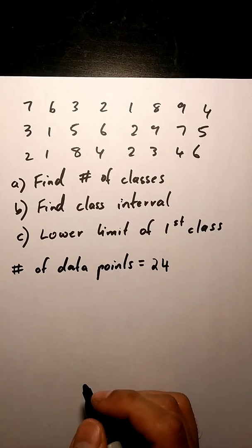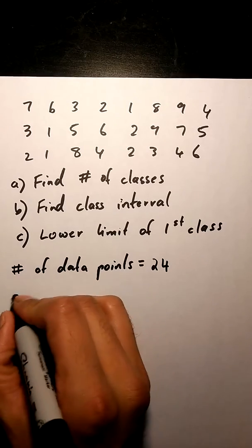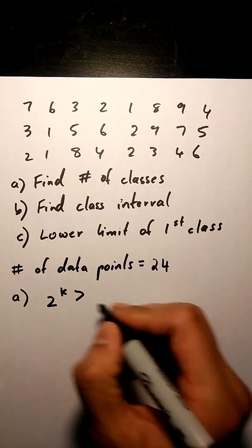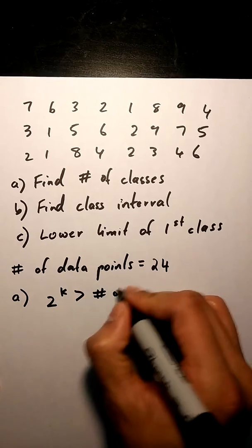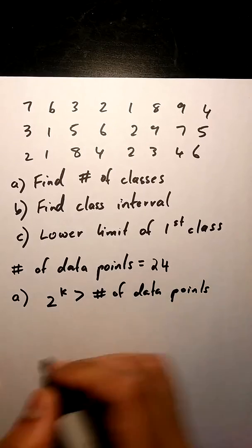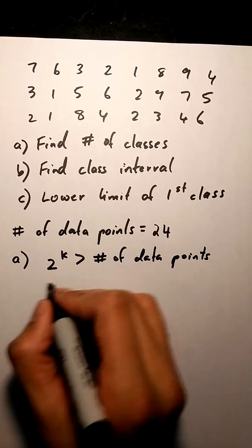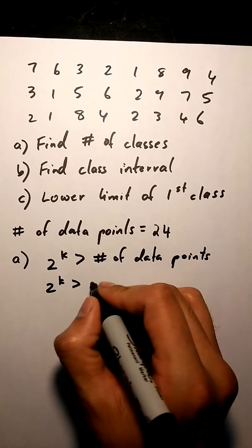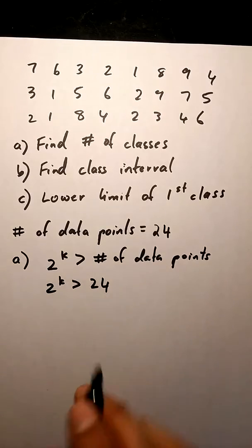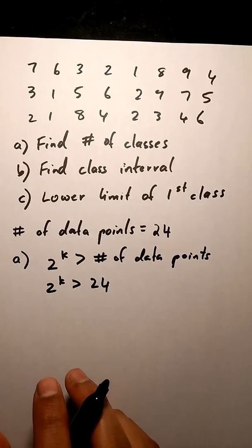In order to find the number of classes, our formula is 2 to the power of K has to be greater than the number of data points. 2 to the power of K has to be greater than 24. So in this case, the first value of K that makes it greater than 24 is 5.